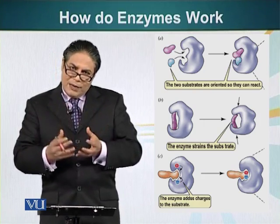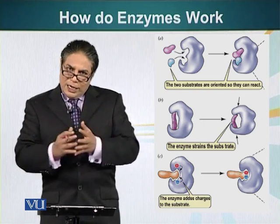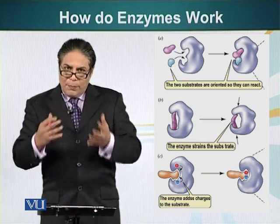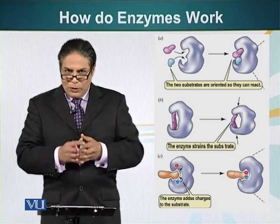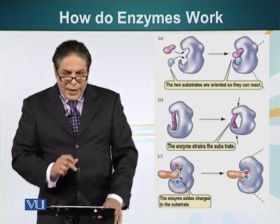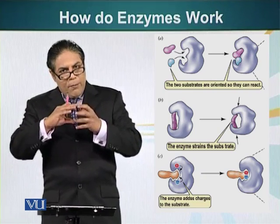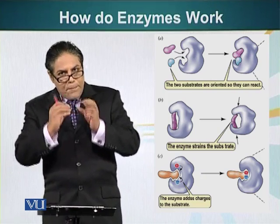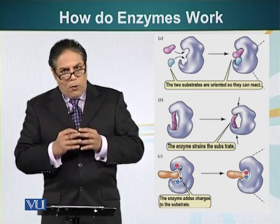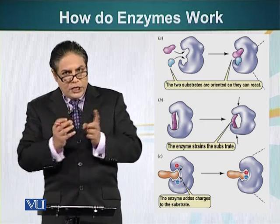When you have enzymes facilitating this process, you can lower the energy requirement, because the collision of two molecules is an energy-requiring process — two molecules have to move and collide with each other. Another mechanism is that enzymes, once they bind a substrate, can change their shape. When they change their shape, they can bend the substrate, thereby weakening some of the bonds.